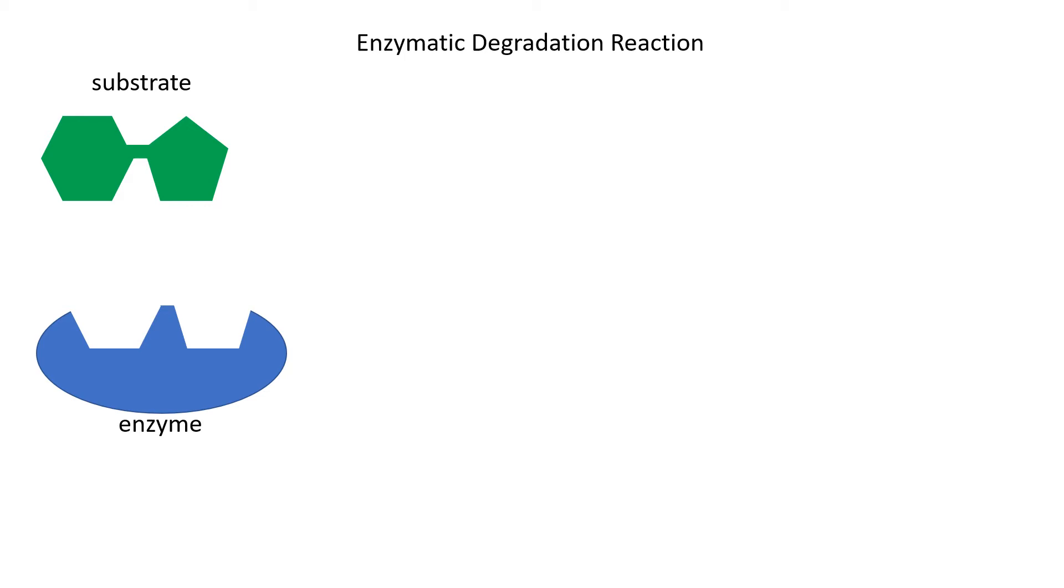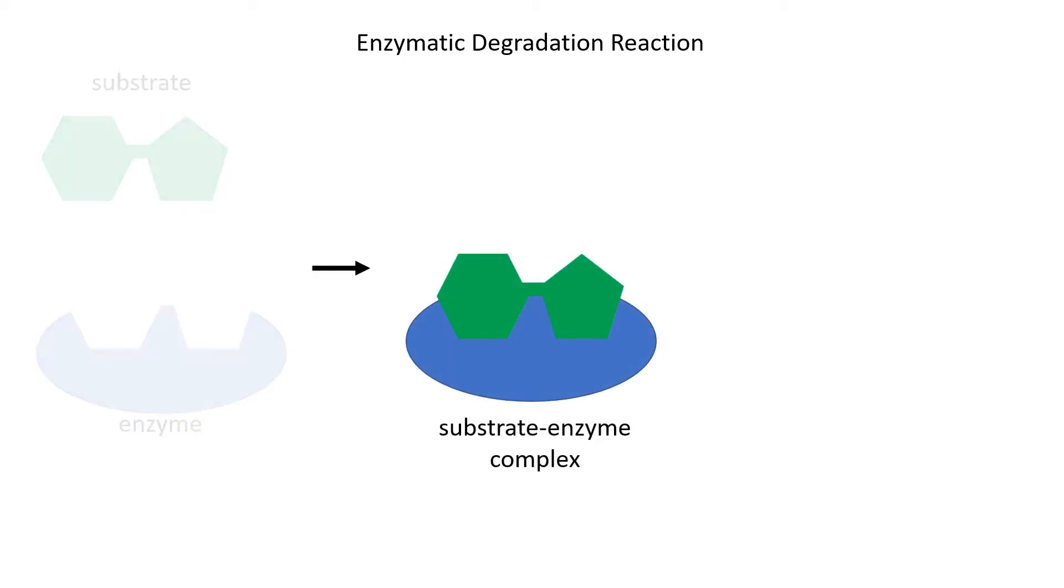So when the substrate and the enzyme come together, they form the substrate enzyme complex. And as long as that molecule, that substrate, is sitting in the active site of the enzyme, the enzyme is doing some work on it. Now what's the enzyme doing? Well, in this case, because it's a degradation reaction, the enzyme is looking at this union that's holding this substance on the left to the substance on the right and it's breaking it down.